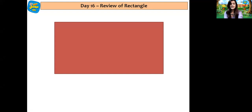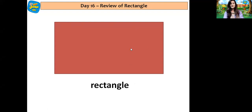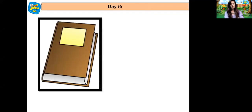This is a rectangle shape and it also has four sides like a square, but it is not a square because a square has four equal sides, while a rectangle has two sides long and two sides short. And this book is also in rectangle shape — this book has two sides long and two sides short.